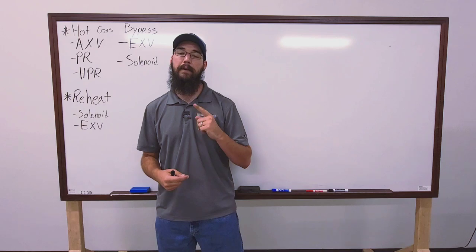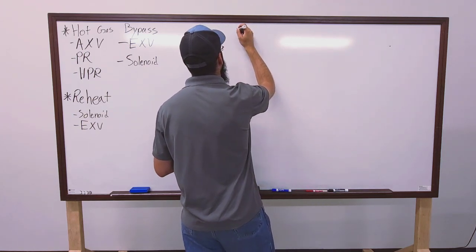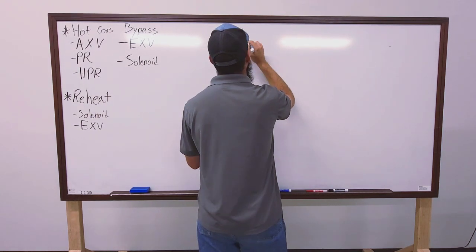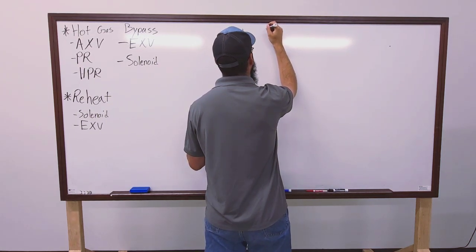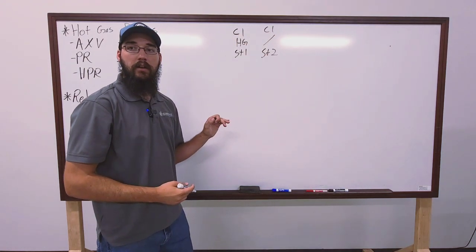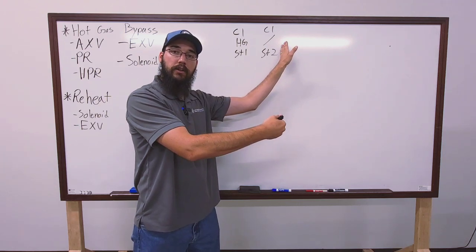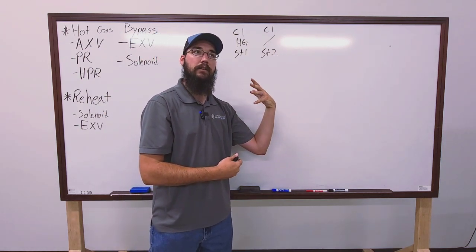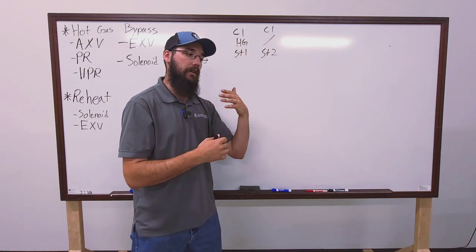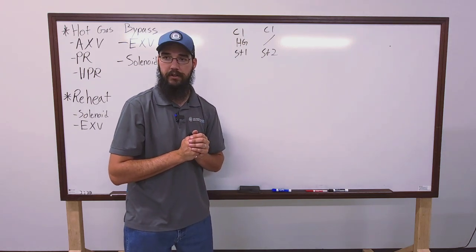As part of the staging on that system, circuit one has a hot gas bypass circuit and if you actually look at the staging in the book, it stages compressor one with hot gas, and that is stage one. And then stage two is just compressor one by itself, no hot gas. And the reason why they're doing that is this unit is controlling off of discharge air. So in RTUs, we'll take the same type of approach.